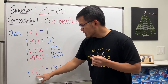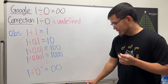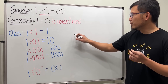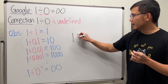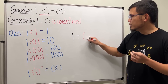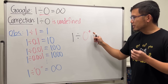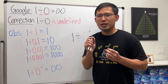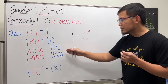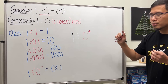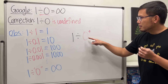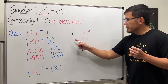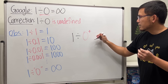Instead of writing one divided by zero, here's what we should be doing: write one divided by zero-plus — that little plus sign right there. This means we still have a tiny amount, like 0.000000...1 with a billion zeros, then a one. This represents just a tiny number bigger than zero.